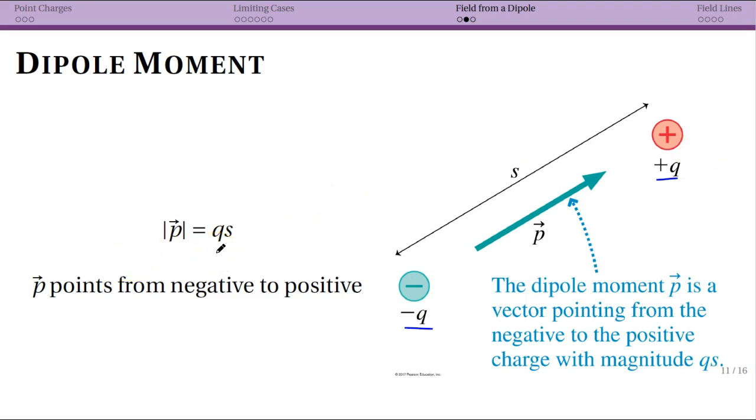So how you get a bigger dipole moment is either by having more charge, so a larger magnitude negative charge, a larger magnitude positive charge, equal in magnitude, or by taking the same charge and separating them. So there are two different ways to get larger dipole moments.